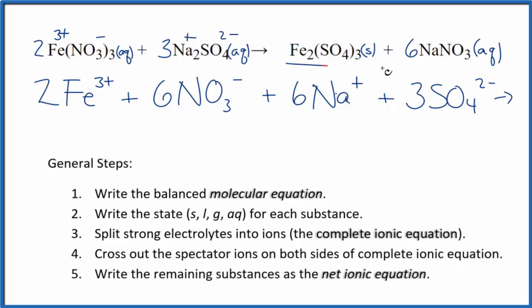For net ionic equations, we don't split solids apart. So we're just going to write Fe2(SO4)3, this is the iron 3 sulfate. And then we said sodium was positive, the nitrate ion negative, 6 sodium ions just like in the reactants, and 6 nitrate ions, also like in the reactants. So this is the complete ionic equation.